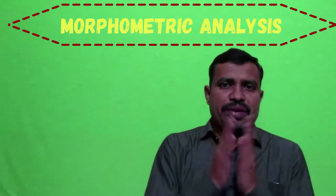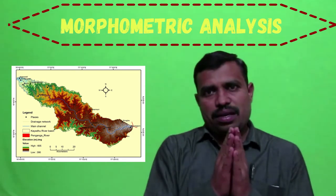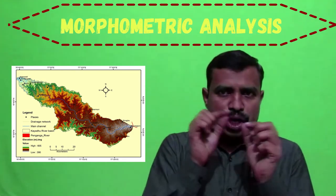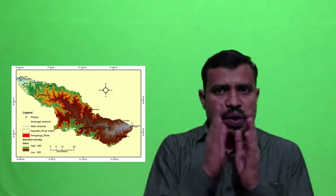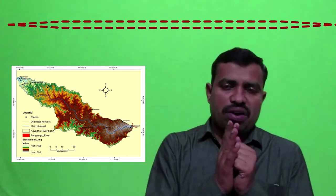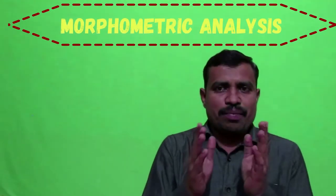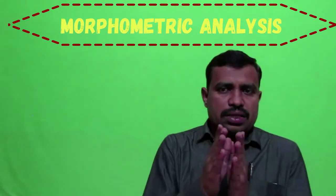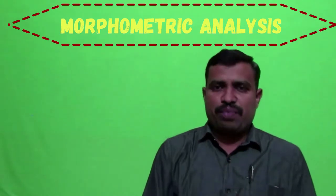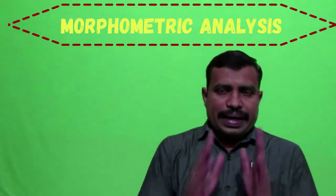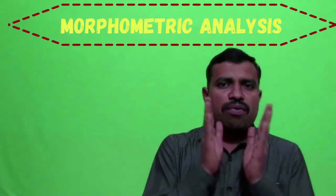Stream frequency is directly related to lithological characteristics. The number of stream segments per unit area is termed stream frequency, channel frequency, or drainage frequency, according to Horton (1945). The total stream frequency of the study area ranges from approximately 3 to 9 per square kilometer.